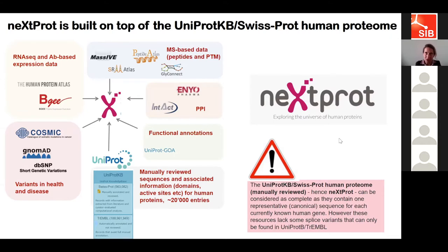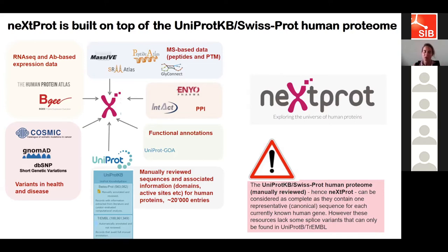In each entry, you find at least one sequence and sometimes other splice isoforms. But it can happen that other isoforms exist and are in UniProt but not in the SwissProt-reviewed part — they're in TrEMBL. So you won't find them in SwissProt and you won't find them in neXtProt. If you are interested in all sequences described for human, you have to turn to the very large corpus of UniProt human sequences. neXtProt only guarantees the reviewed sequences from SwissProt.